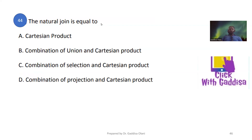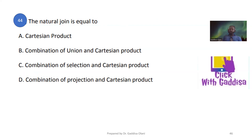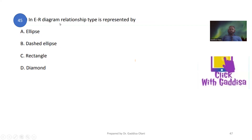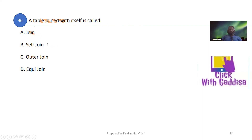The natural join is equivalent to applying projection and Cartesian product. In an ER diagram, a relationship type is represented by a diamond shape — the relation is called a diamond. A table joined with itself is called a self join.